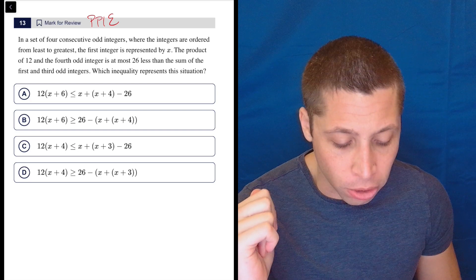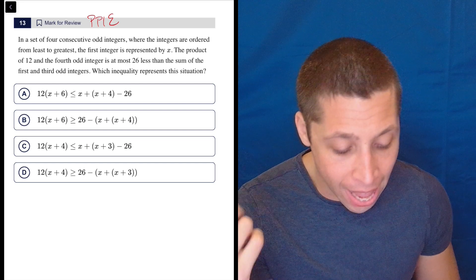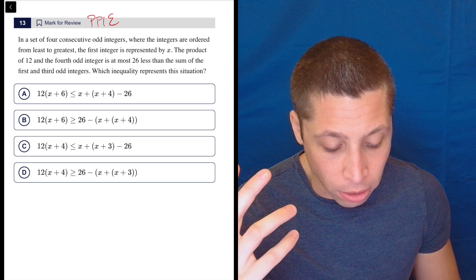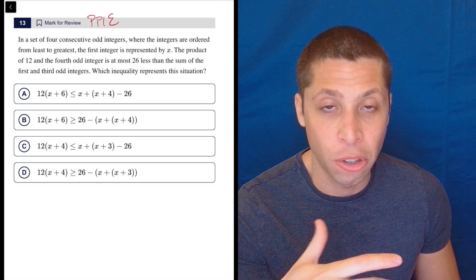In a set of four consecutive odd integers where the integers are ordered from least to greatest, the first integer is represented by x. The product of 12 and the fourth odd integer is at most 26 less than the sum of the first and third odd integers, which inequality represents the situation?